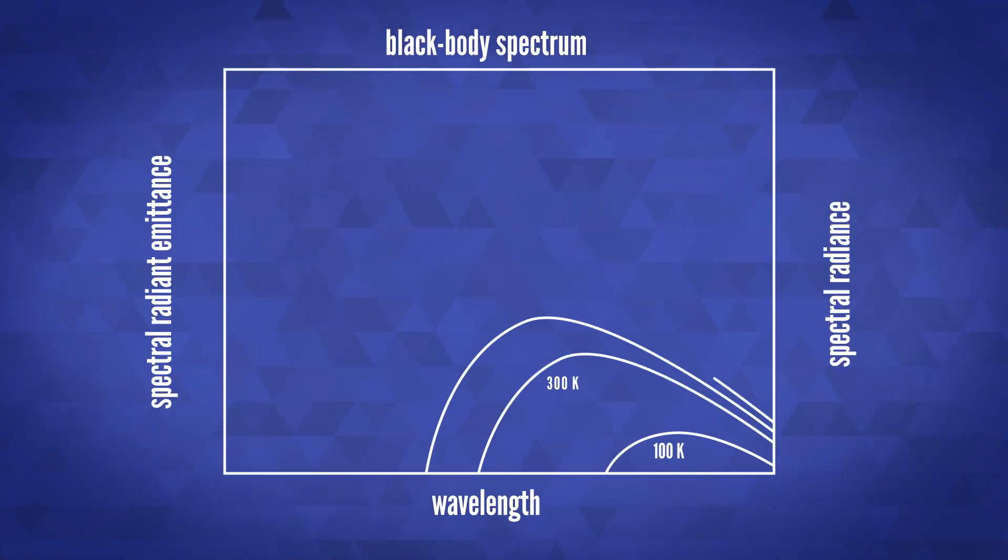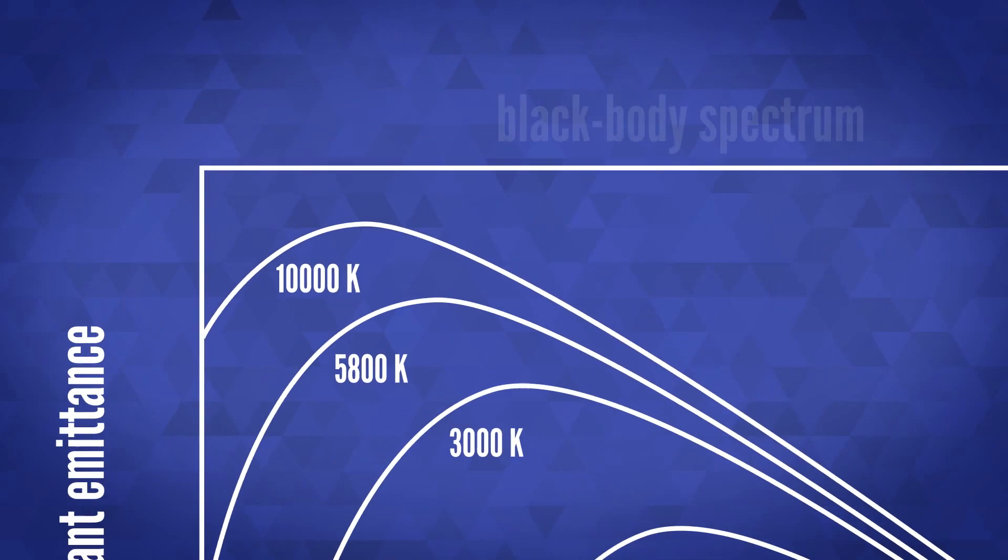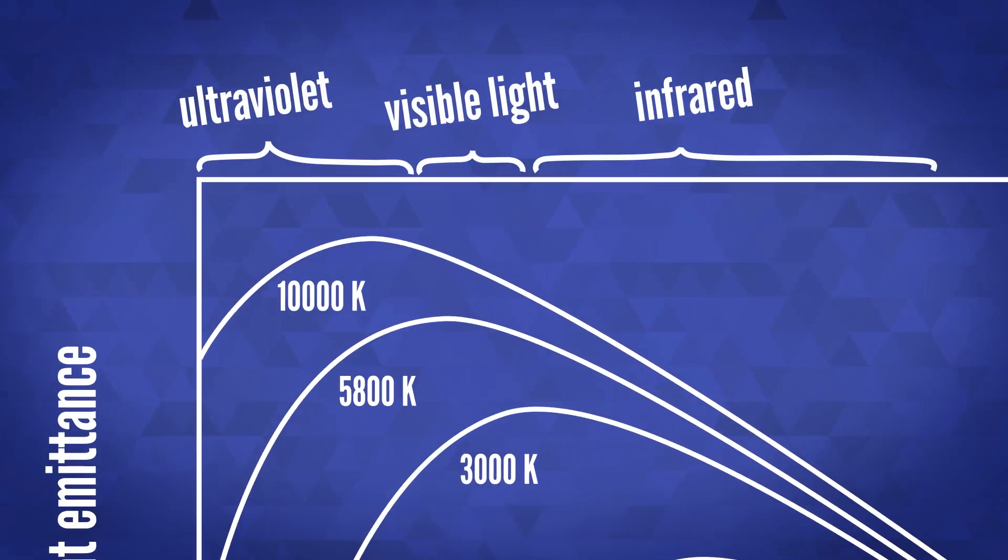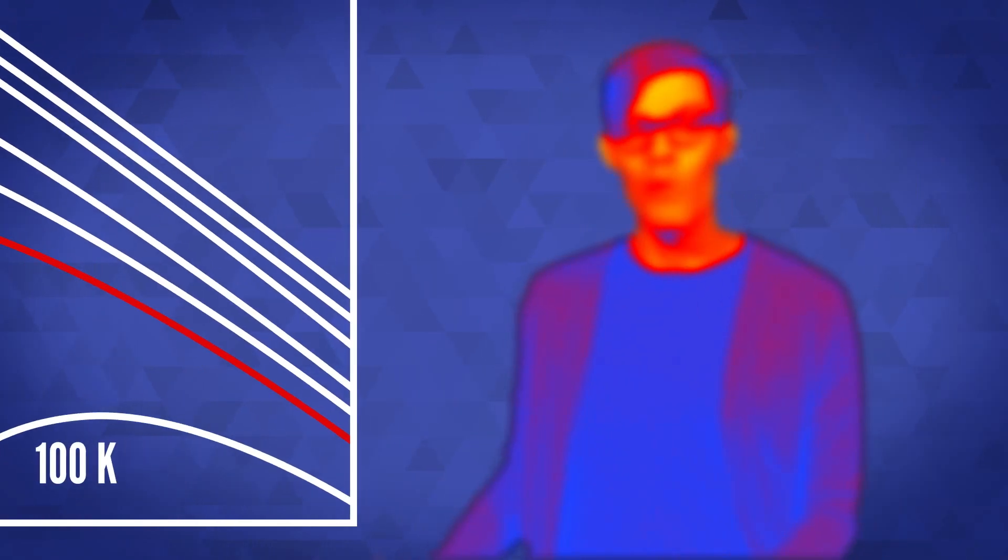The emitted black body radiation is a mix of certain wavelengths whose lengths depend on the temperature. When things get really, really hot, they can emit into the ultraviolet. You and I are emitting radiation right now, but it's down in the infrared. Because we're so cool.